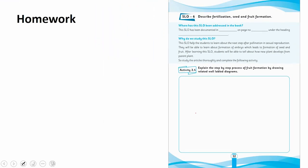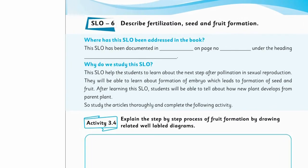Then move to the Summer Pack. Open page 32 and solve Activity 3.4. Before solving 3.4, you need to study and complete this section. In the first question, find the addressing of the SLO in your textbook and study the purpose of this SLO — why it is necessary for you to study. After that, move to the activity. Activity 3.4 requires you to explain the step-by-step process of fruit formation by drawing related, well-labeled diagrams for each step involved.